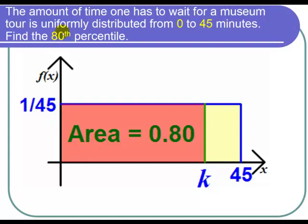We want to find the 80th percentile. We want to find the number k such that 80% of the data falls below that number k.